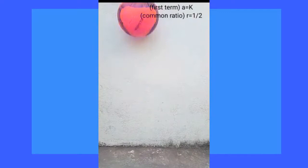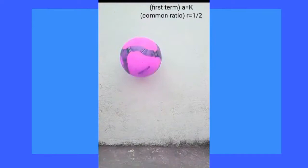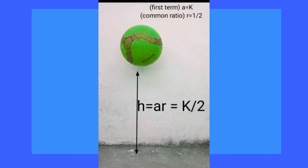Now under the influence of the force of gravity, the ball comes down. After the first bounce, the maximum height reached by the ball gets halved of what it previously was, and in turn, the second term of the GP that is AR equals k upon 2.